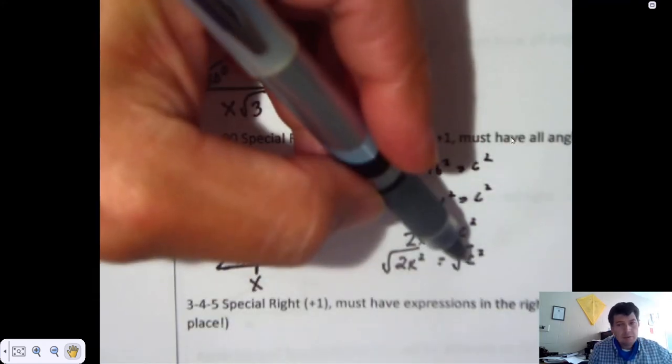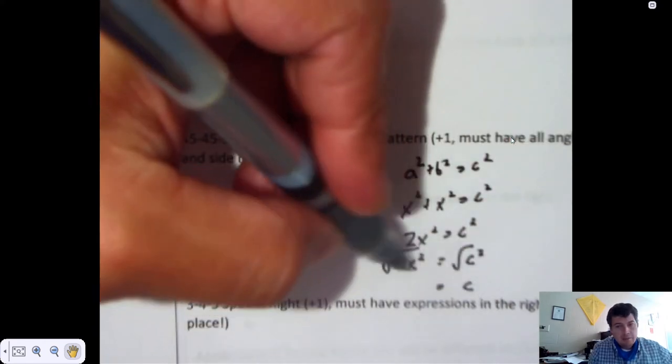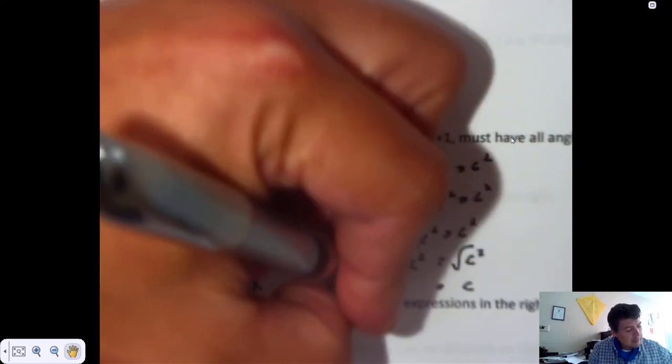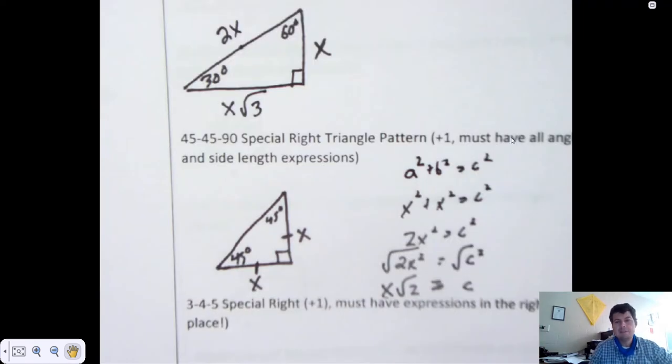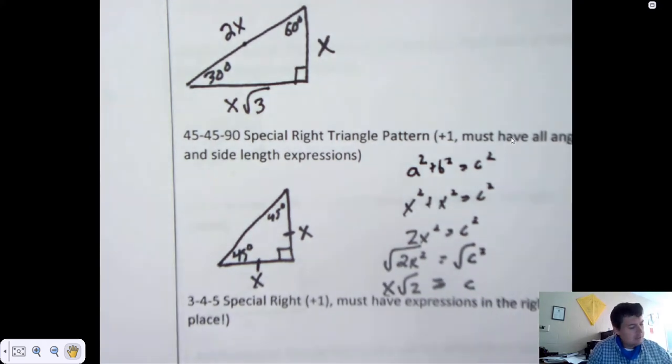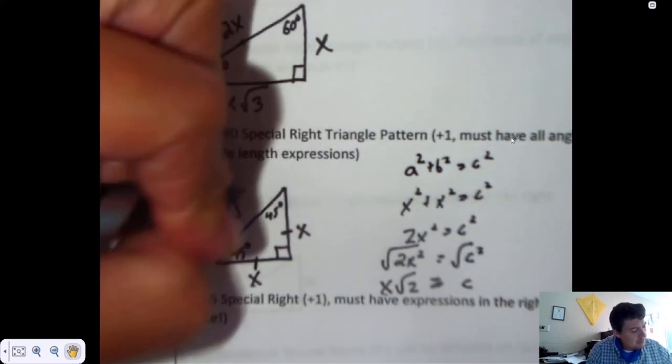When you take the square root of something squared, you get the piece inside. You can take the square root of x², it's x. However, the square root of 2 is what you call irrational. Think back to seventh grade when we talked about that. That means it's just not going to be pretty, it's a never-ending decimal. So here's your hypotenuse: x root 2.